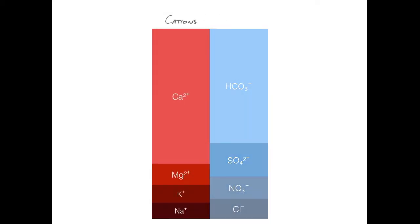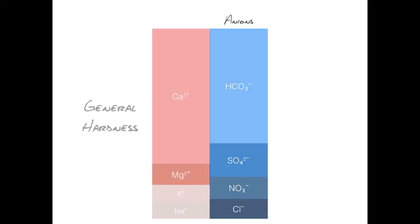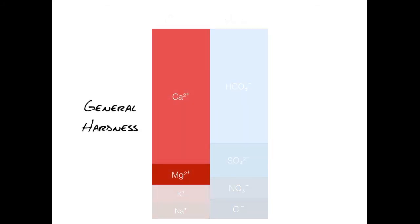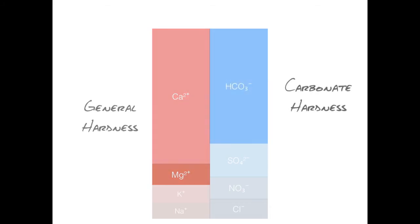Let's rearrange these ions into cations and anions. The general hardness, or GH, comes from calcium and magnesium ions. The carbonate hardness, or KH, comes from bicarbonate.